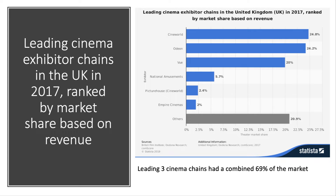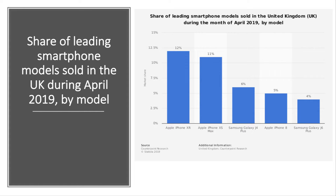A couple of examples of oligopolistic markets in the UK. Here are the cinema exhibitor chains — the leading three cinemas, Cineworld, Odeon and Vue, together accounted for 69% of the market in 2017. Cineworld has also recently bought Picturehouse, so this is clearly an oligopoly with three firms essentially dominating the market. And here's some up-to-date information on the share of leading smartphone models sold in Britain in April 2019 — an oligopoly, but in many ways a duopoly, with Apple and Samsung taking the biggest share of the leading five models.